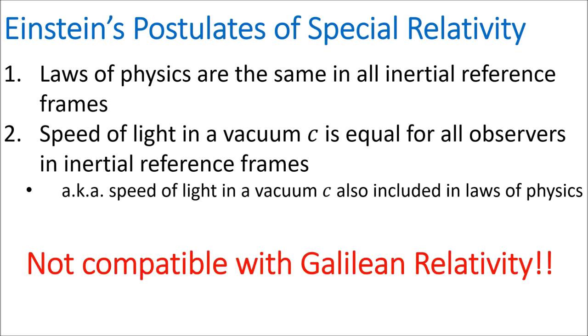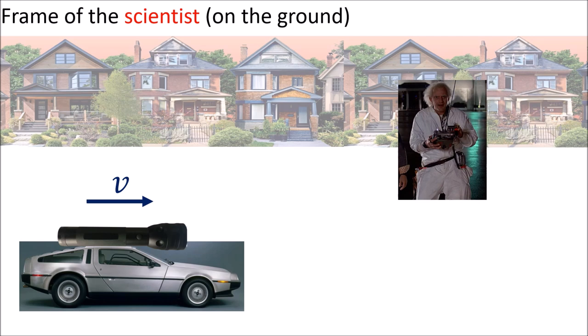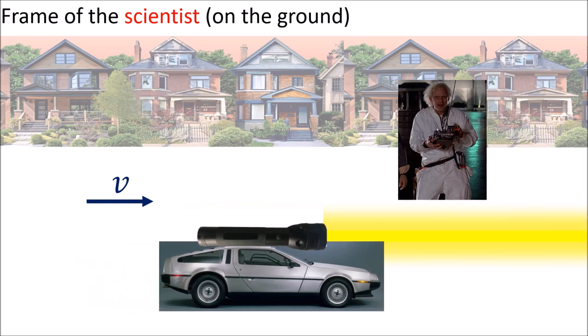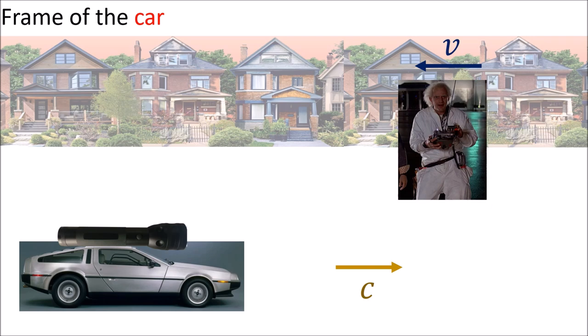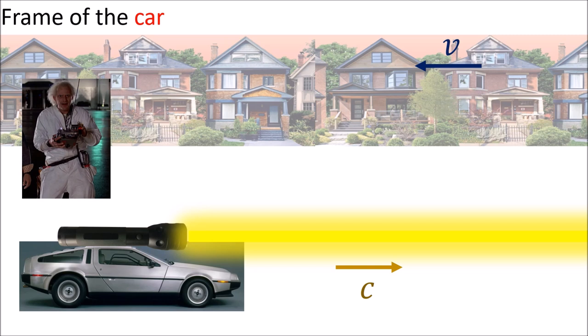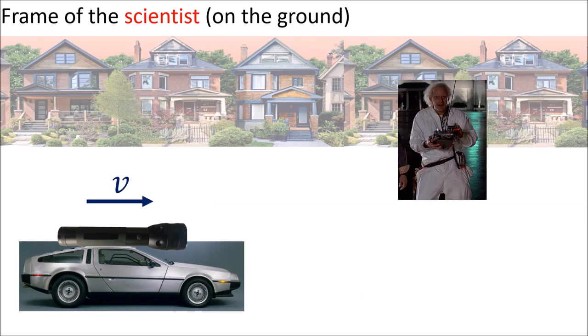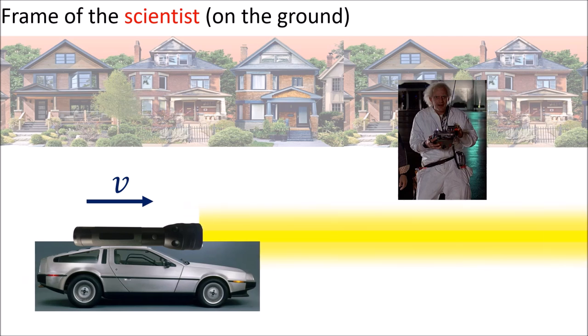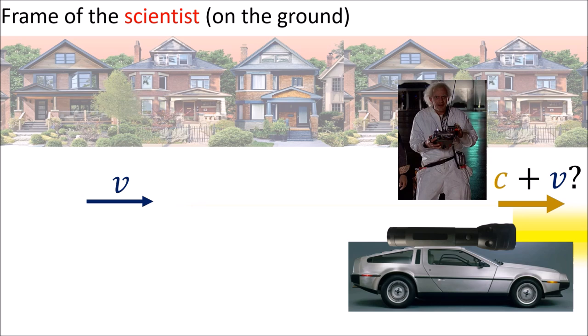Unfortunately, these postulates are not compatible with Galilean relativity. To see why, we can consider our example of the scientist on the ground, and the car traveling along with speed v to the right, this time with a giant flashlight attached on its roof. In the frame of the car, the driver sees the scientist pass by with a speed v to the left, and the light coming out from the flashlight travels right with the speed of light c. But in the frame of reference of the scientist, since the car is traveling right with speed v, the light coming out of the flashlight would appear to have the speed of light c plus the speed of the car v. But this violates the new postulate that the speed of light is a law of physics that's constant in all inertial frames, which includes both the car and the physicist.